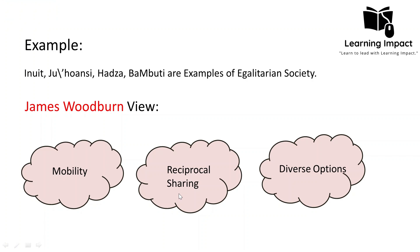The second reason is reciprocal sharing. Even if one family gathered more fruits or hunted more animals, their belief was in reciprocal sharing — they shared the extra food with others. In return, other families would do the same when they had more. There was no concept of ownership or surplus because whatever they had extra they were always sharing with others. This reciprocal sharing is what actually made the society egalitarian.